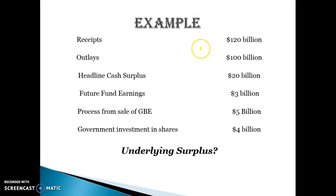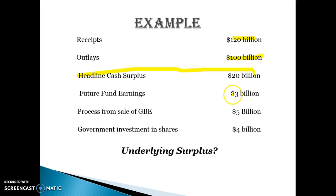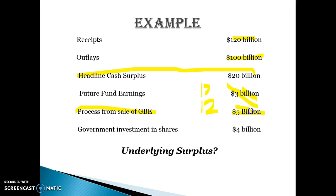Here's an example. Receipts $120 billion, outlays $100 billion, so the headline cash surplus would be $20 billion. But $3 billion of that is future fund earnings, so that won't get included in underlying — we're down to $17 billion. Another $5 billion is the proceeds from selling a government business enterprise; that's not included in underlying, so we're down to $12 billion. These two things have been deducted because they're not part of the underlying balance.